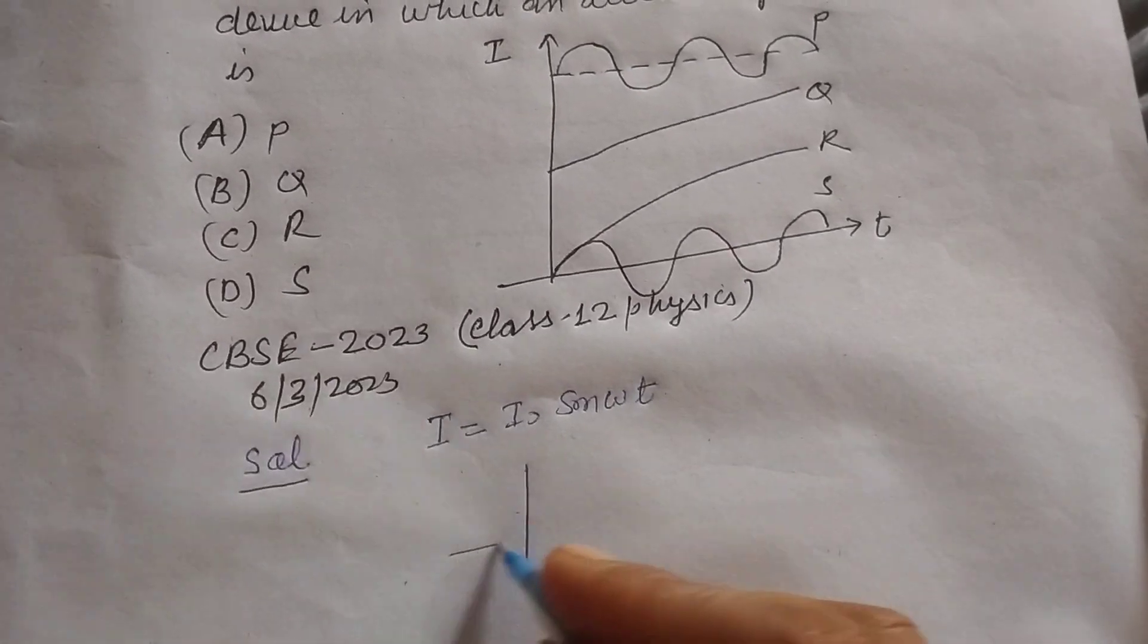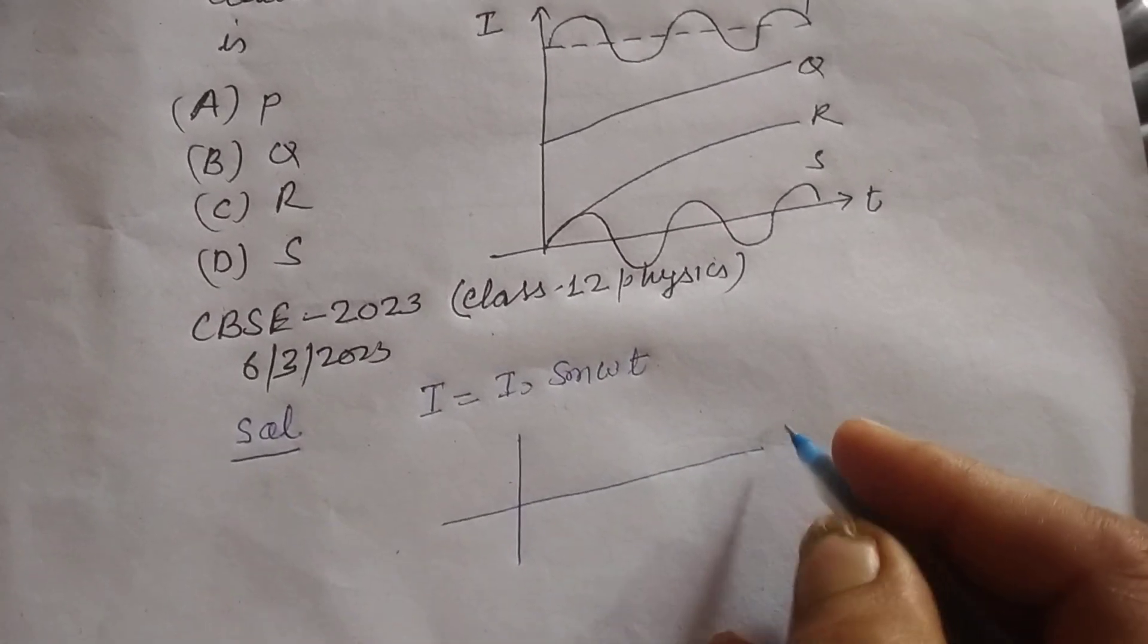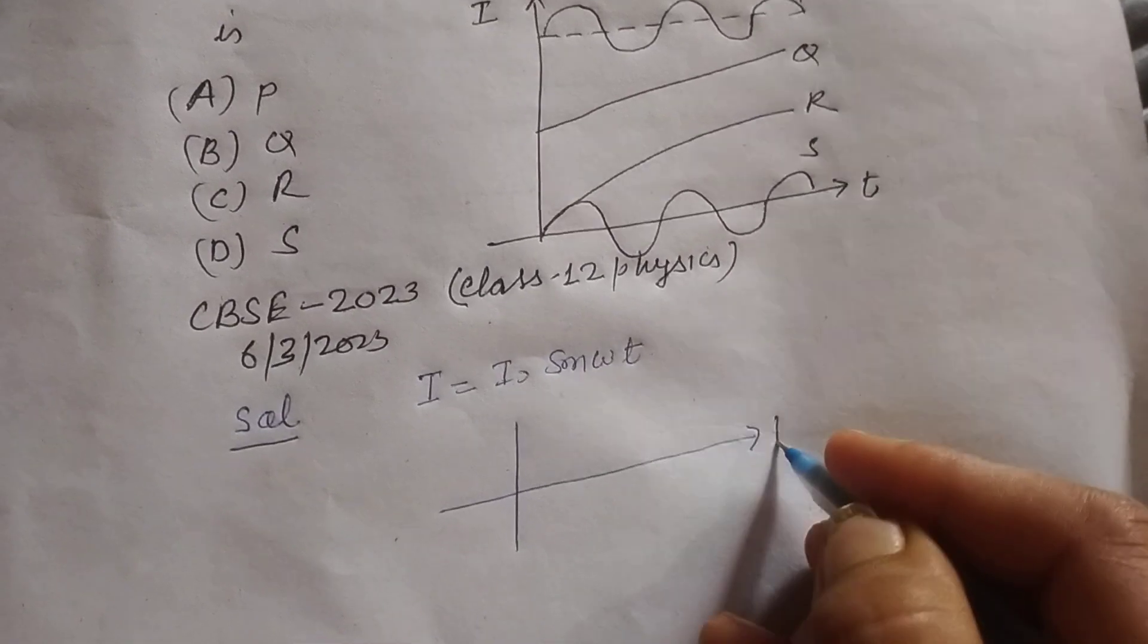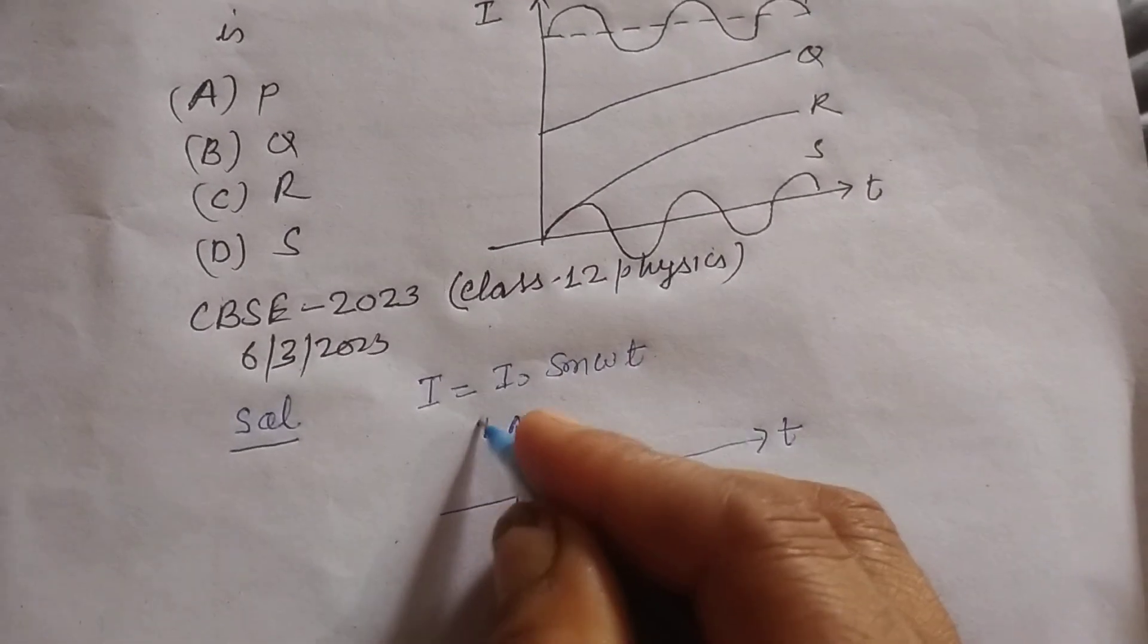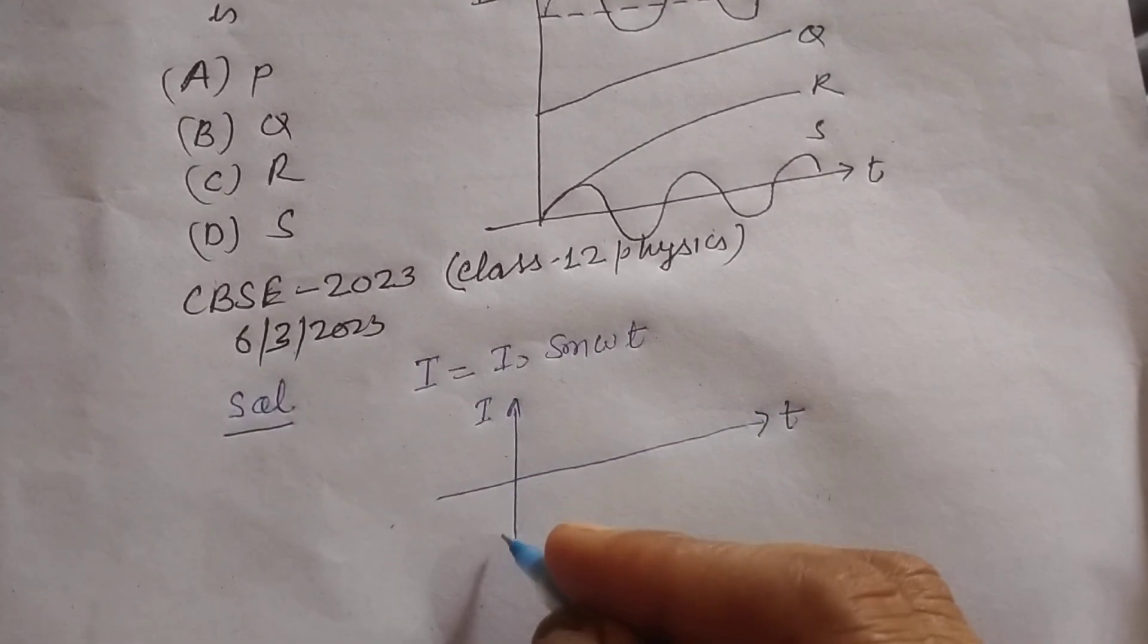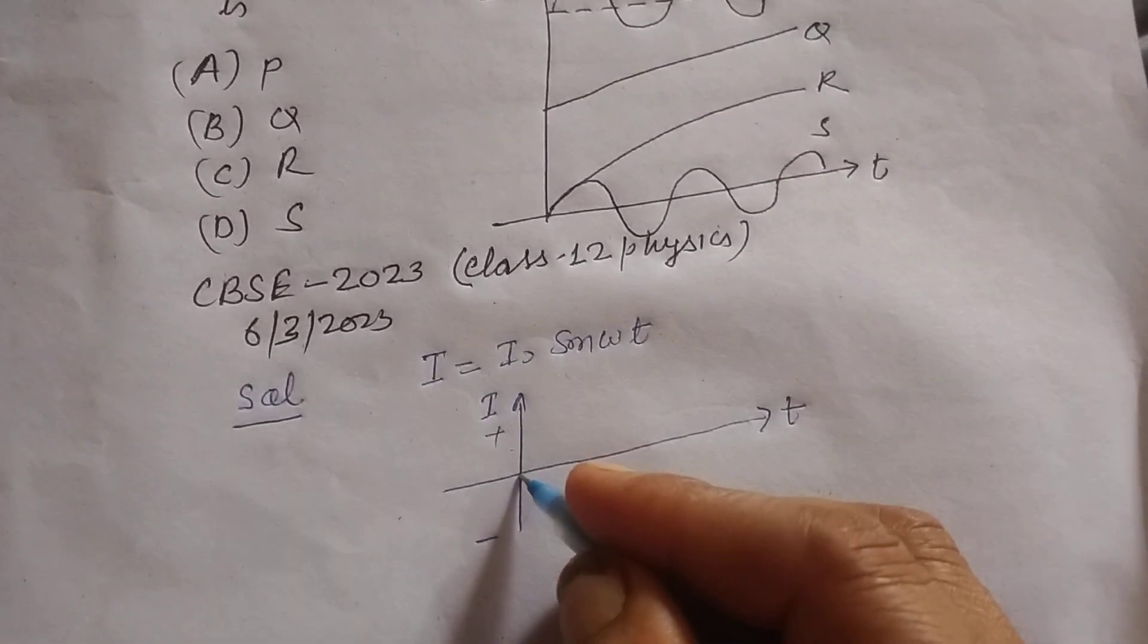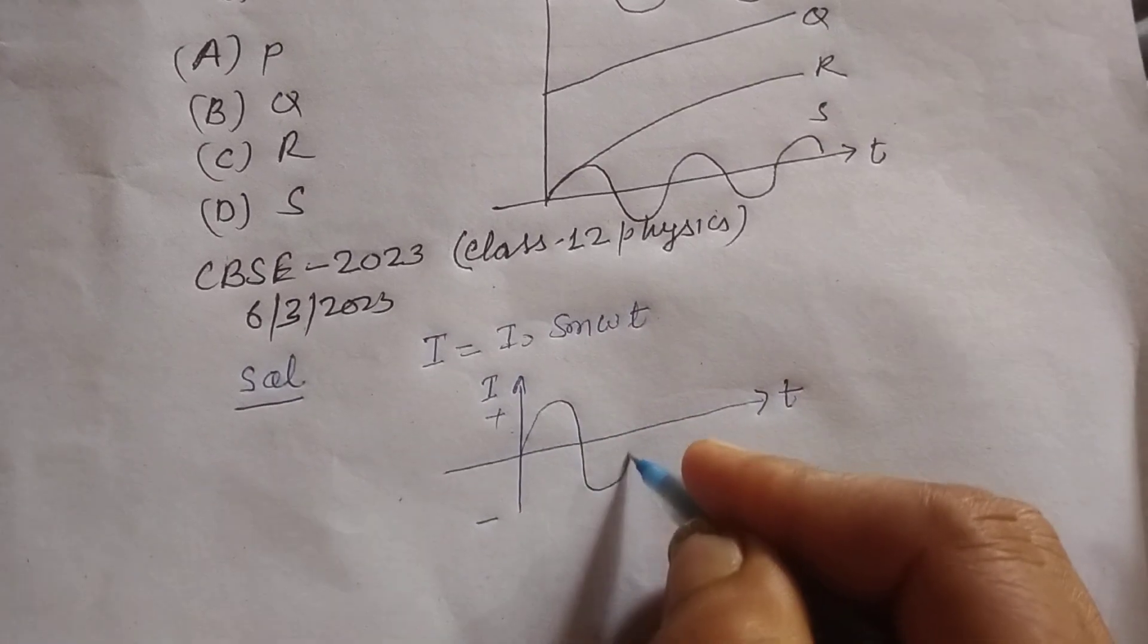When we make its graph on axes, t is taken as x-axis as time and I is alternating current. This is the negative part and this is positive part. When we draw the graph, this is a sinusoidal graph.